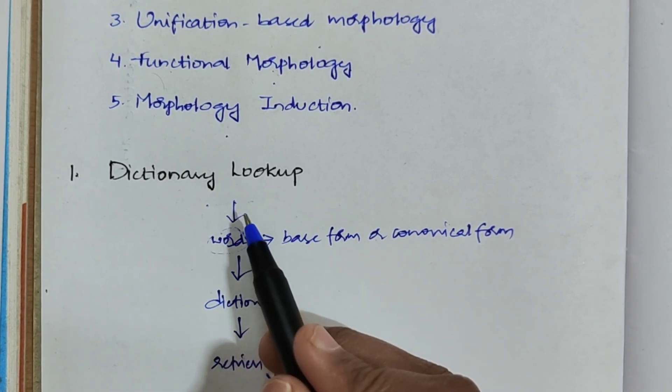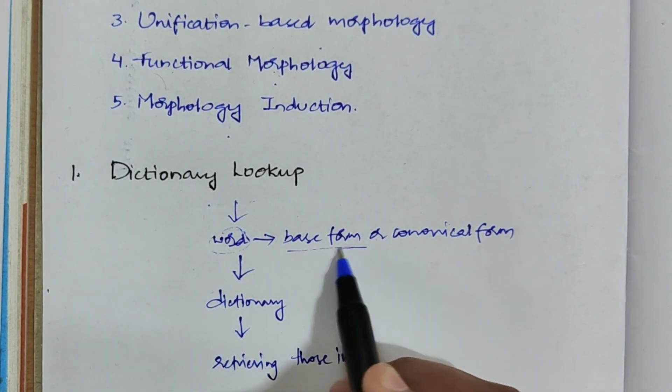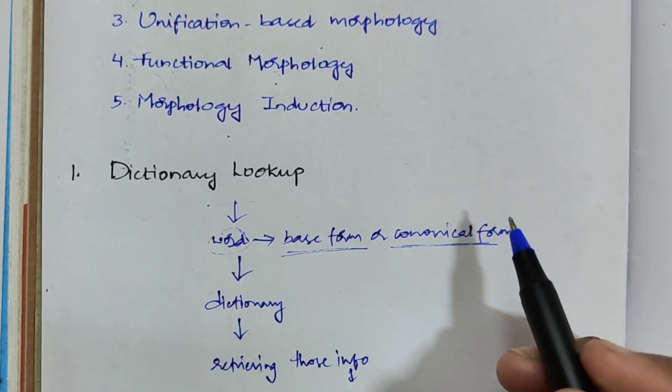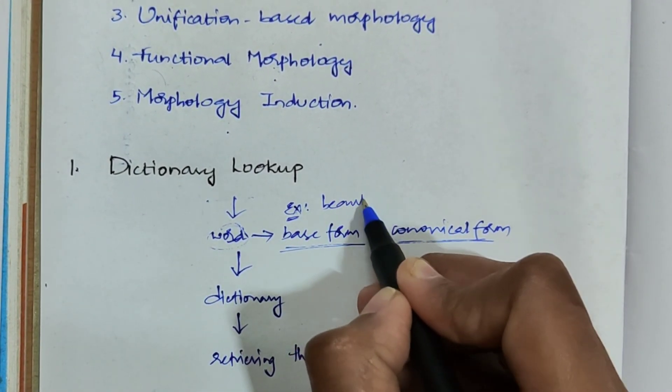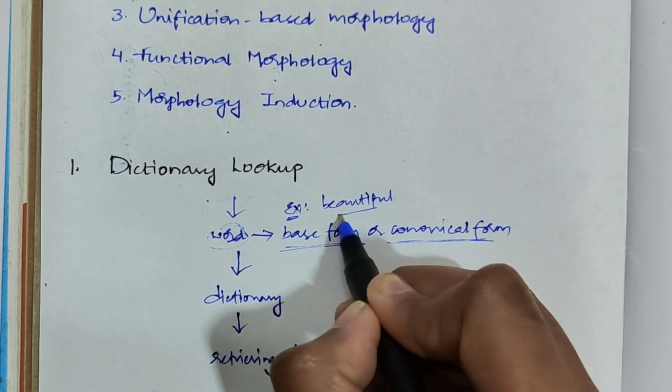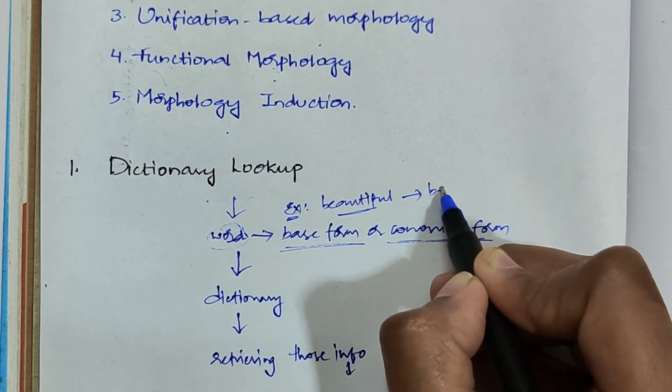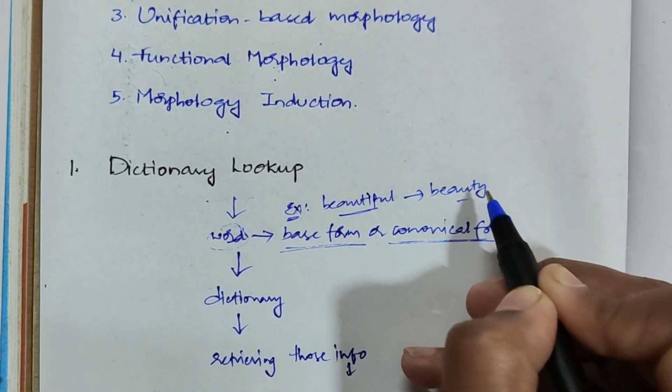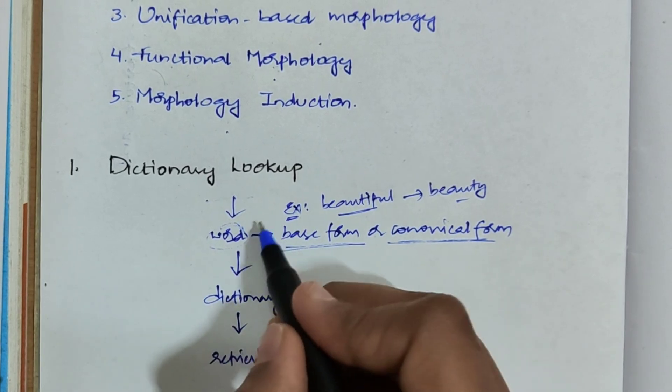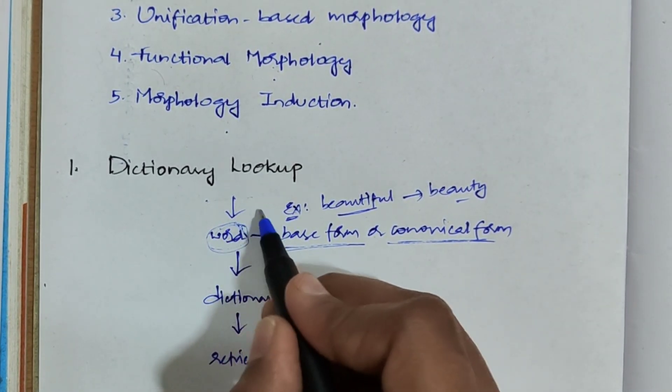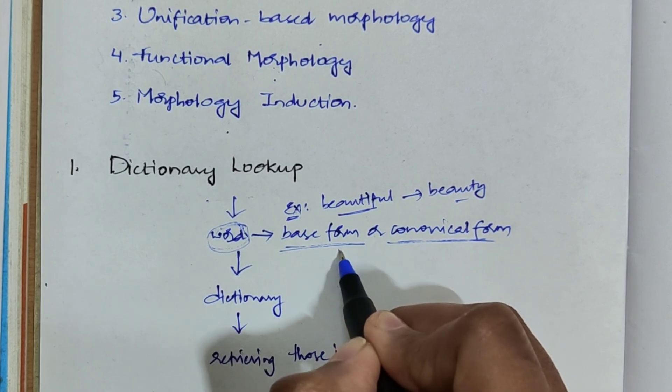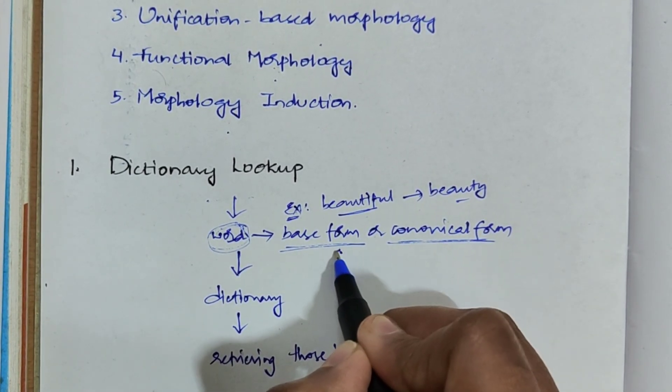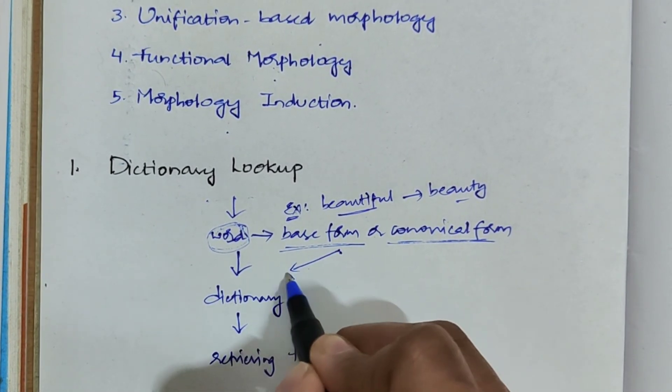What is this base form? Example: you have 'beautiful,' right? What is the base word for that? 'Beauty' is the base form for beautiful. Whatever word you wanted to analyze should be converted into the base form. After converting, you have to search that particular word in the dictionary.